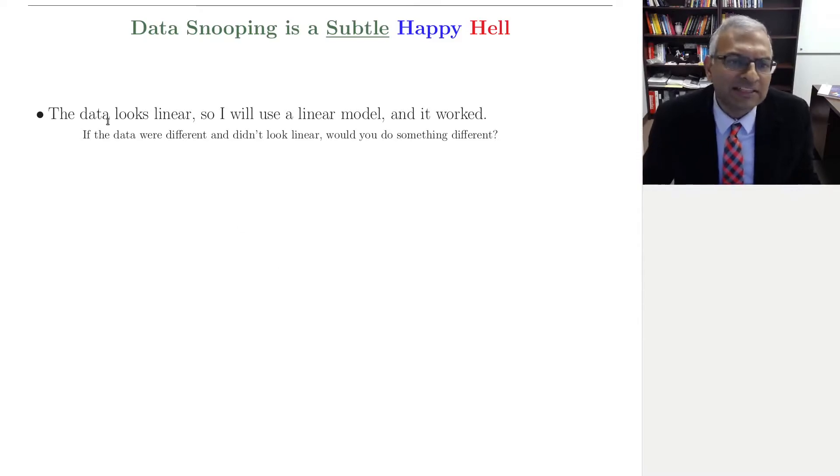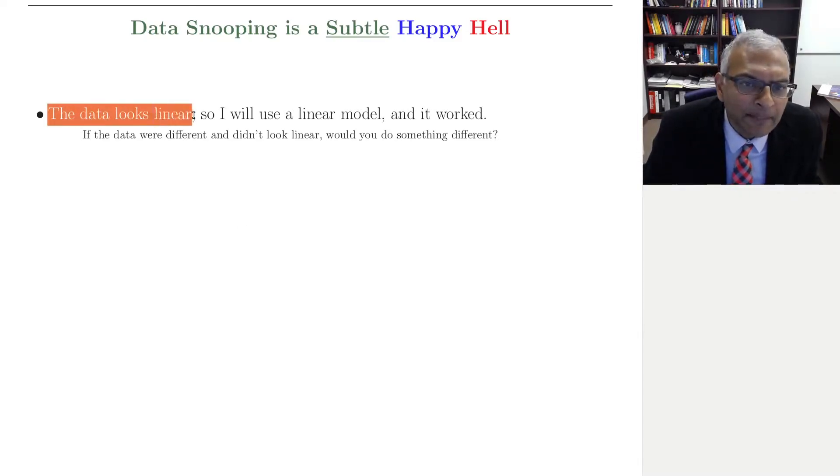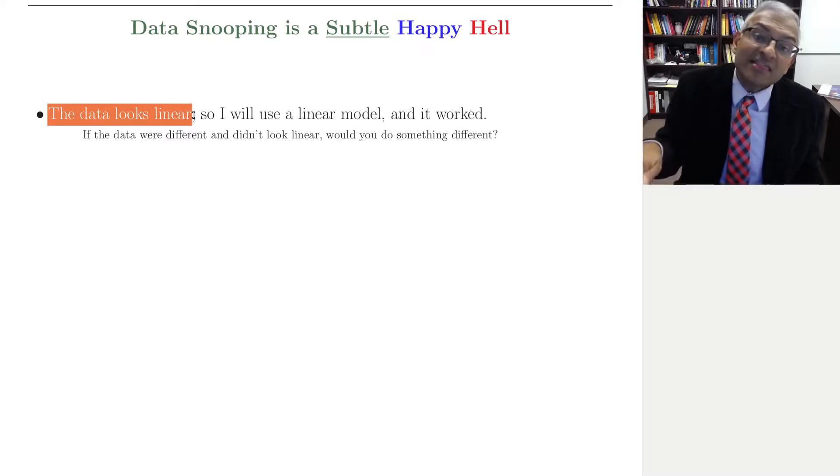Data snooping. What does it mean, the data looks linear? The linear model was something that you chose, and the data affected that choice.